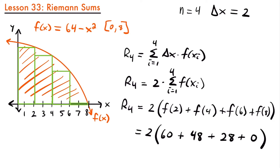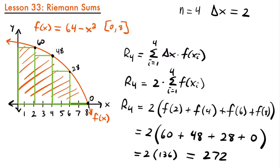The height of each rectangle corresponds to these values. Our first rectangle has height 60, the second has height 48, the third has height 28, and the last has height 0 — that's why it was so small. Our right endpoints are (2, 60), (4, 48), (6, 28), and (8, 0). So we have 60 plus 48 plus 28 plus 0, which equals 136, times 2, giving us 272. That is the area of these rectangles underneath this curve.